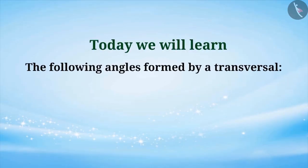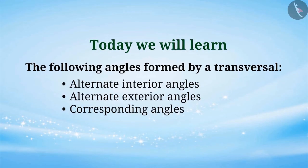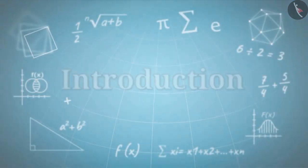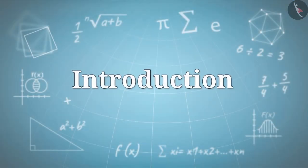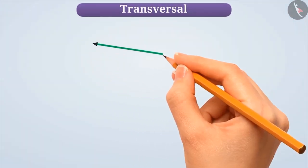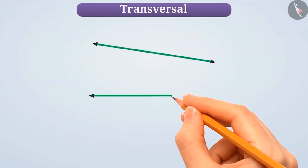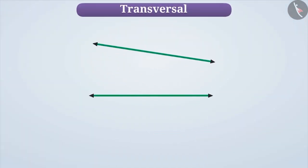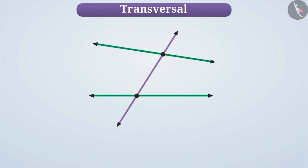Today, we will learn about the following angles formed by a transversal. In the previous video, we learned that a line that intersects two or more lines at different points is called a transversal.